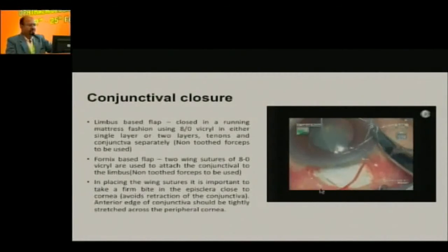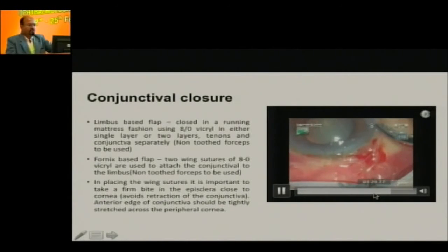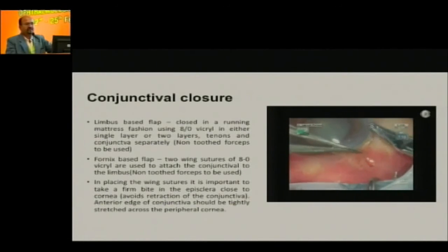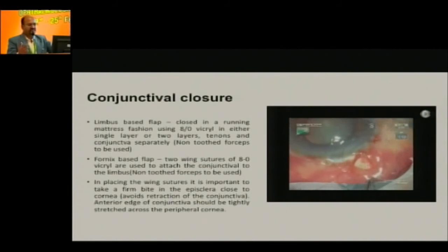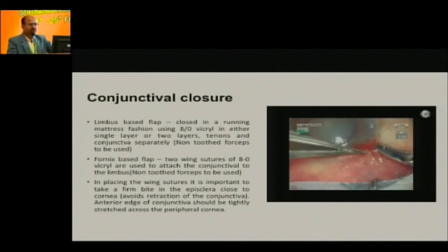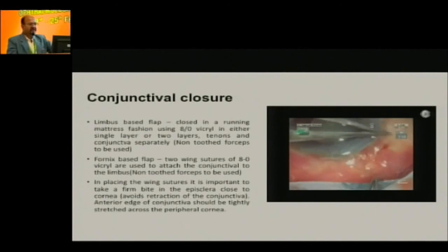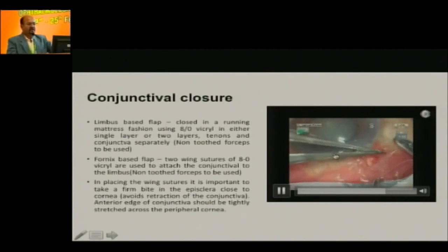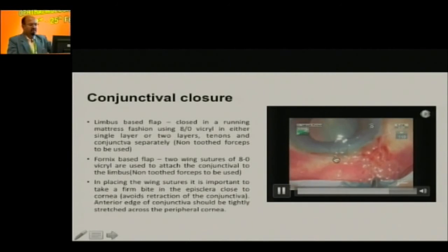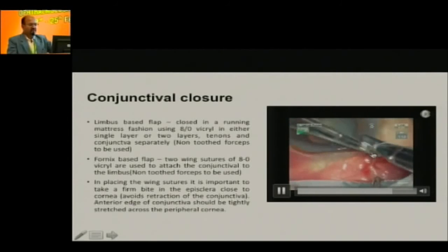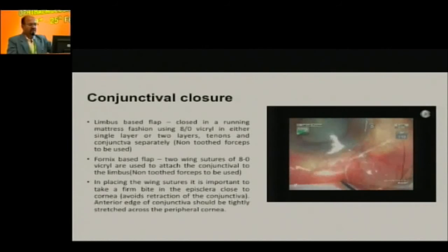Conjunctival closure is very important. You have to take an episcleral bite — if you just oppose the conjunctiva, it has a property to retract once sutures become loose, and aqueous also has a lytic property that can lyse the suture and prevent wound healing. Make sure the conjunctiva is brought forward as much as possible. I tell my fellows that the iridectomy should not be visible — the conjunctiva should be brought forward so much that you don't see the iridectomy. We use wing sutures on either side to oppose the conjunctiva, anchored to the episcleral — one wing suture with three loops on the right and one with one loop on the left.